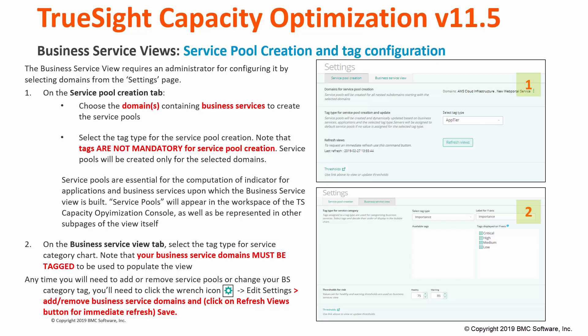Service Pools will appear in the workspace of the TrueSight Capacity Optimization Console, as well as be presented in other sub-pages of the view itself. On the Business Service View tab within the Settings page, select the Tag Type for Service Category Chart. Note that your Business Service Domains must be tagged to be used to populate the view. Any time you need to add or remove Service Pools or change your Business Service Category Tag, you'll need to click the wrench icon Edit Settings under Remove Business Service Domain and then save it.